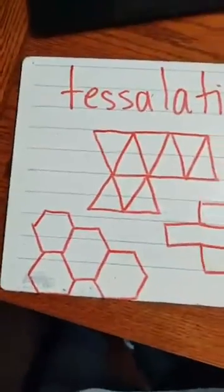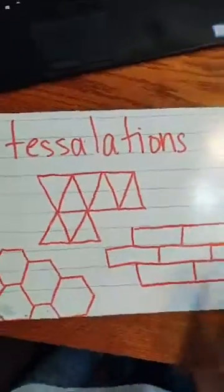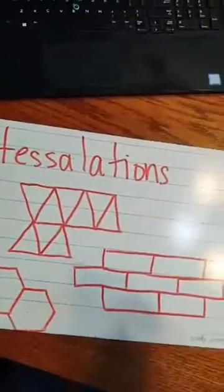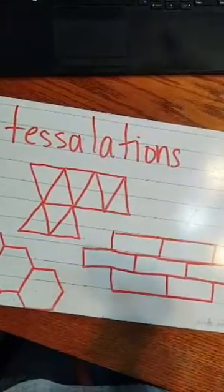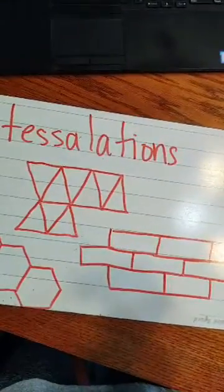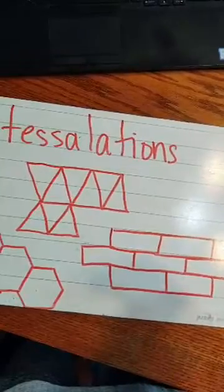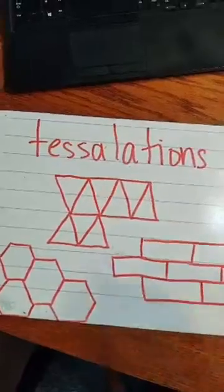So remember, a tessellation is tiling. It's repeated use of a pattern here. And you can use polygons as long as they are not going to have gaps or overlap. So not all polygons will work, but there are a lot that will.